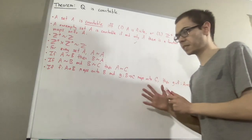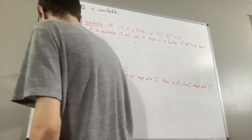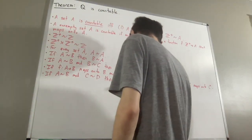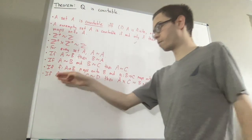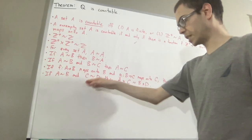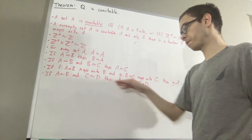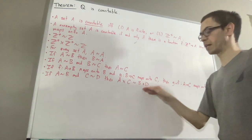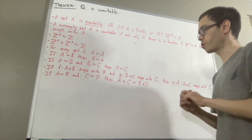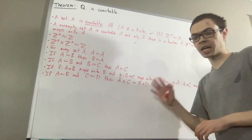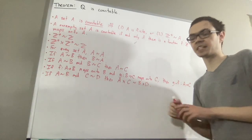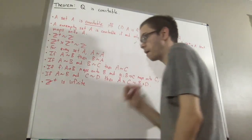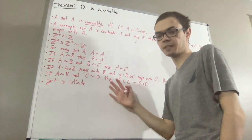Another property about bijections: if there is a bijection from A to B, and there is a bijection from C to D, then there is a bijection from the Cartesian product A×C to the Cartesian product B×D. We have also proven that the set of positive integers is an infinite set, and that every subset of a finite set is finite.